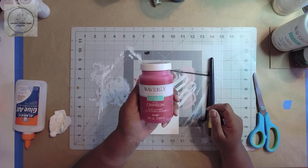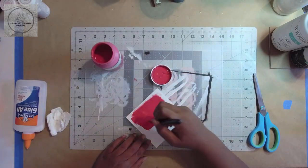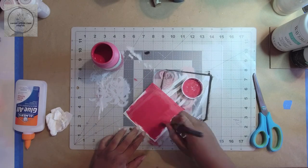I painted the other square with Waverly chalk paint in crimson. I ended up doing three coats, drying between each coat.